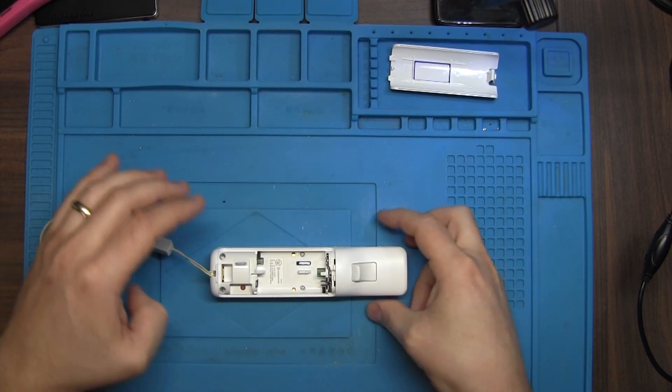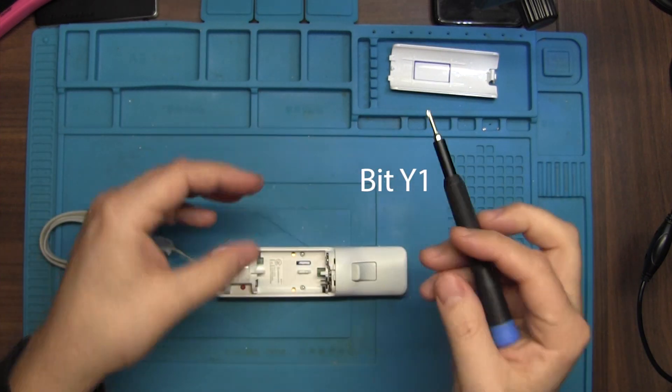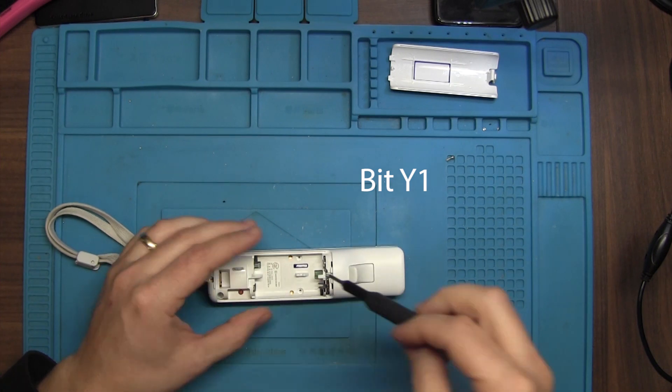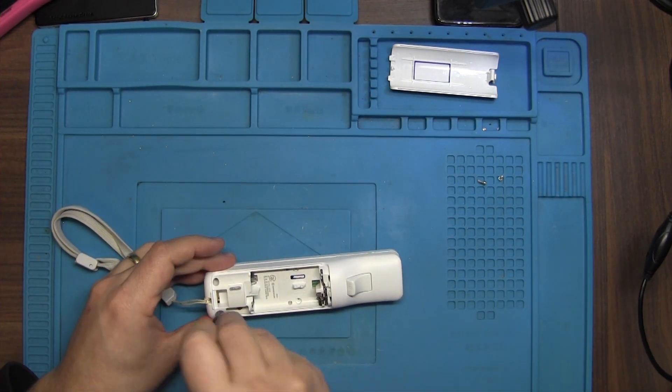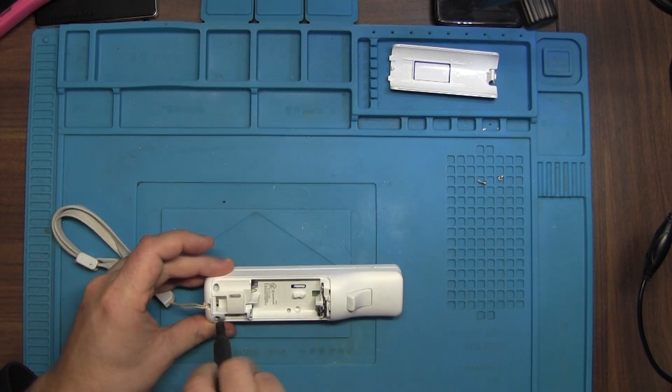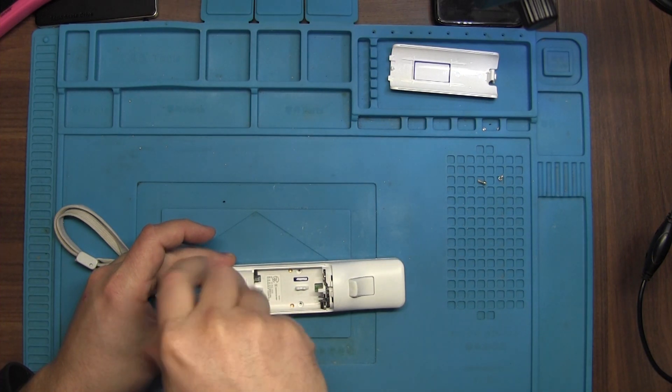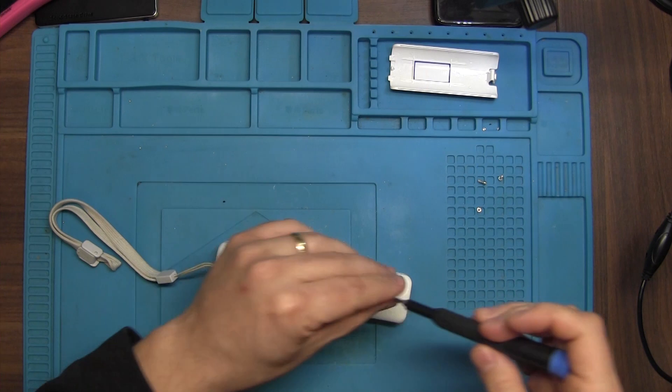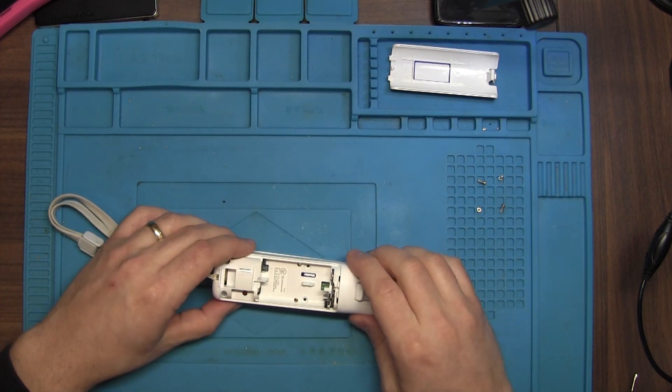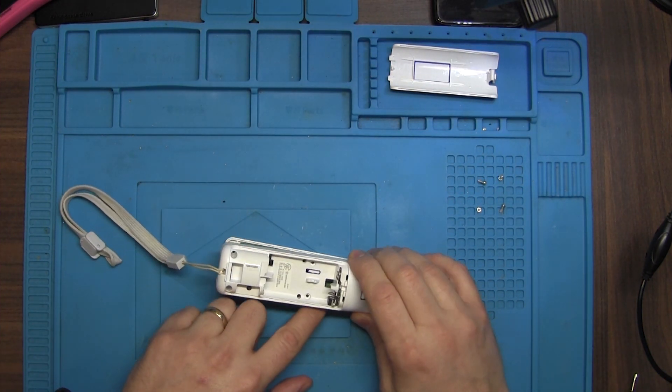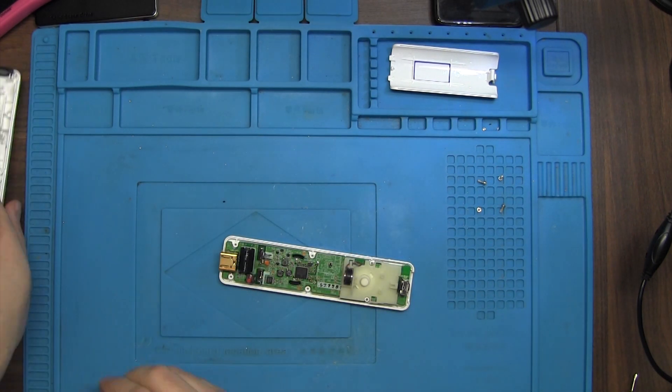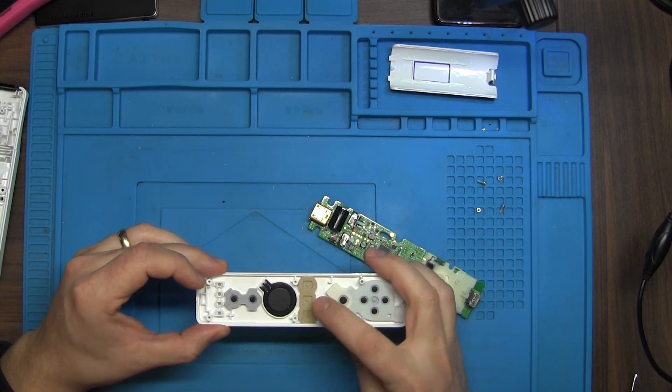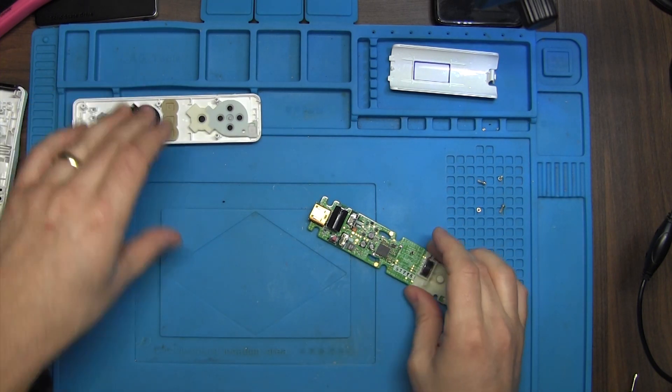We have a Wii remote where the motion control doesn't work anymore, so let's see if we can fix it. To open it we need the Y1 bit driver. There are four screws in it. This is pretty easy to open, just open it facing down with the buttons facing down, otherwise the buttons will drop everywhere.